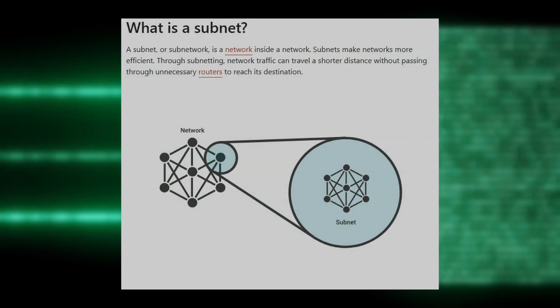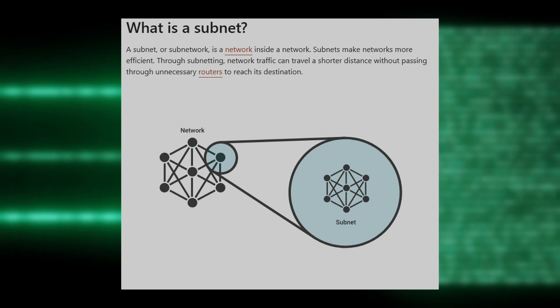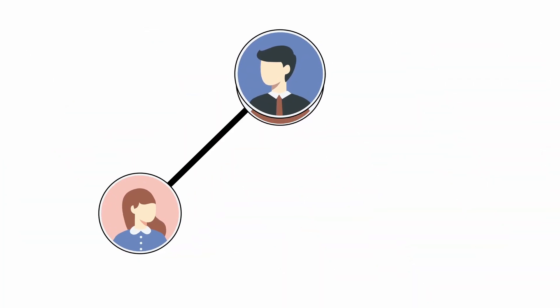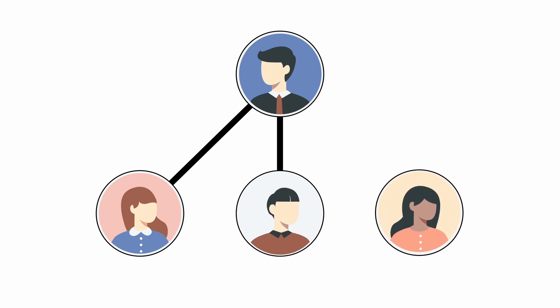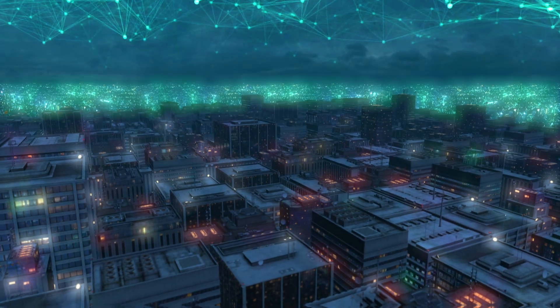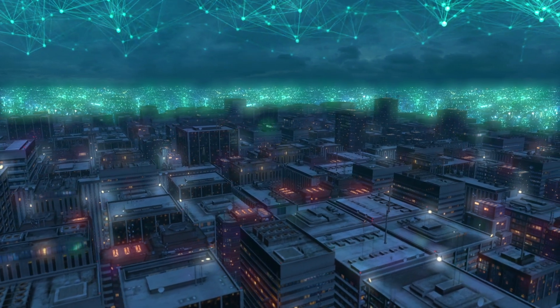Subnetting allows us to split a large network into smaller, more manageable sections, or subnets. For instance, a company might use one IP range but divide it into subnets for different departments like IT, HR, and sales, so each group has its own section. Subnetting helps manage network traffic, control access, and improve security.